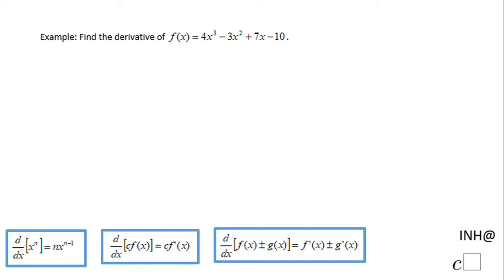Welcome or welcome back. I need help at C Square. In this example, we need to find the derivative of f(x) = 4x³ - 3x² + 7x - 10, and I'm going to do that by using these three rules.